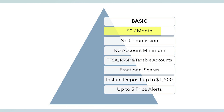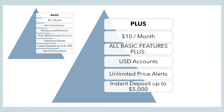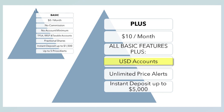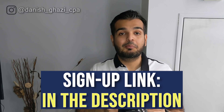Let's summarize Basic versus Plus so you can decide what makes the most sense for you. Basic costs $0 a month, has no commission, no account minimum, you can open a TFSA, RRSP, and taxable accounts, you get access to fractional shares, instant deposits up to $1,500, and up to 5 price alerts. Plus costs $10 a month and includes all Basic features, plus a USD account with no commissions or foreign exchange fees on USD trades, unlimited price alerts, and instant deposits up to $5,000. If you're averaging even one trade a month involving US stocks or ETFs, the Plus subscription is the most cost-effective option. If you're only trading in Canadian dollars, the Basic version is your best bet.